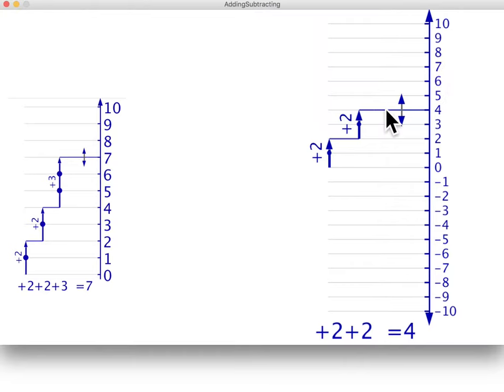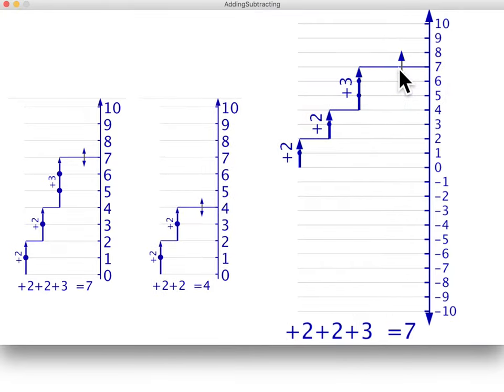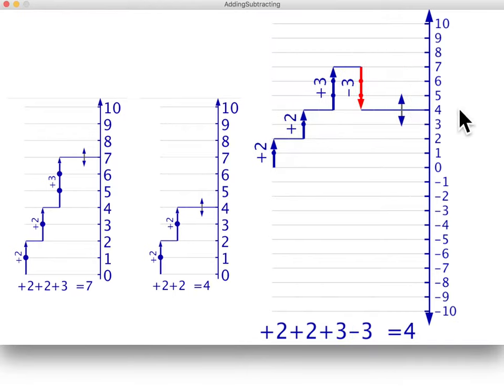Let's restore the plus three step and compare the effect of adding a minus three step. As you can see, this also takes us back to a total of four, so we can see that subtracting a positive number is the same as adding a negative number of the same size.